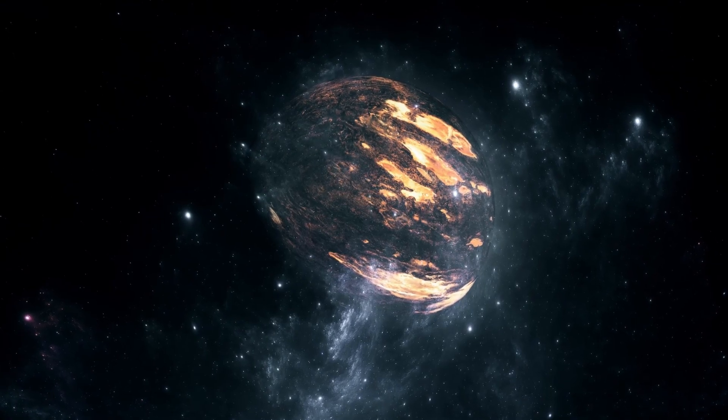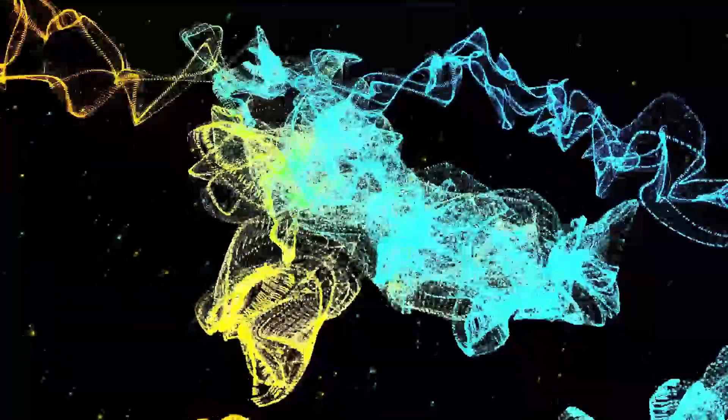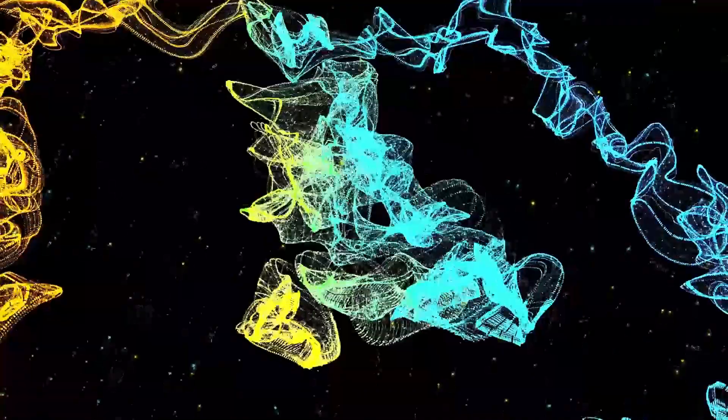So what would a supernova from Betelgeuse mean for Earth? Thankfully, we're in no danger. At 725 light years away, the explosion wouldn't harm us with radiation or debris. But it would offer a spectacular view, dominating the night sky for weeks and becoming a beacon from Orion's shoulder.